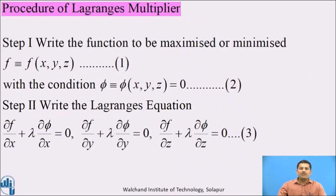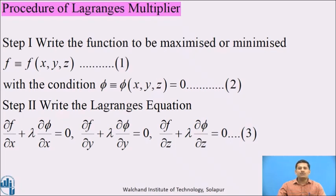Now, the problem is we have a given function f, which may be a function of 2 or 3 independent variables, and with that function we have provided one restriction. In this problem, we want to extremize the given function subjected to a certain condition. To find the extreme value in such a problem, we will use Lagrange's undetermined multipliers.